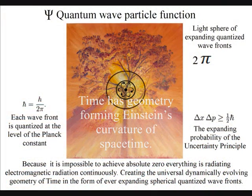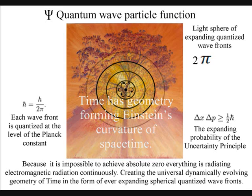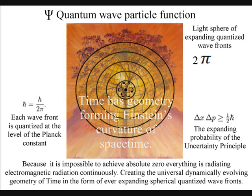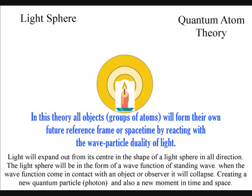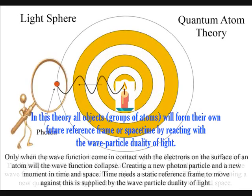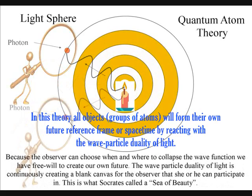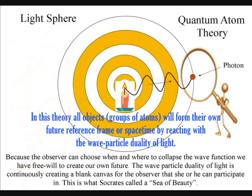We live in a dynamically evolving universe of continuous change because of the probabilistic nature of the wave-particle duality of light. Only if light waves come in contact with an object will they form new photons of quantized energy that will have a unique position in space and time.